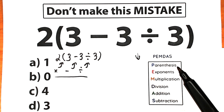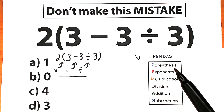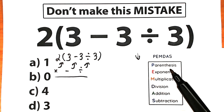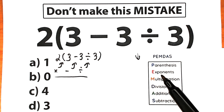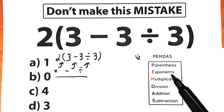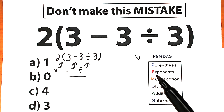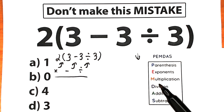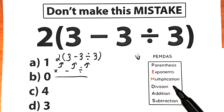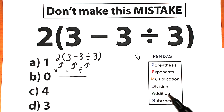Parentheses have the highest position, which means parentheses have the highest priority. Next is exponents — like 2 squared, 2 cubed. Next is the multiplication and division group. And the last step is addition and subtraction.